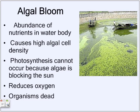Algal bloom is when a water body receives too many nutrients — a nitrogen overload. There would be too many nutrients in the water, causing a lot of algae to reproduce and grow really fast. It would cover a vast area of the water, the sun can't penetrate through it, oxygen in the water is reduced, and the organisms would die because of the lack of oxygen, which is called hypoxia.